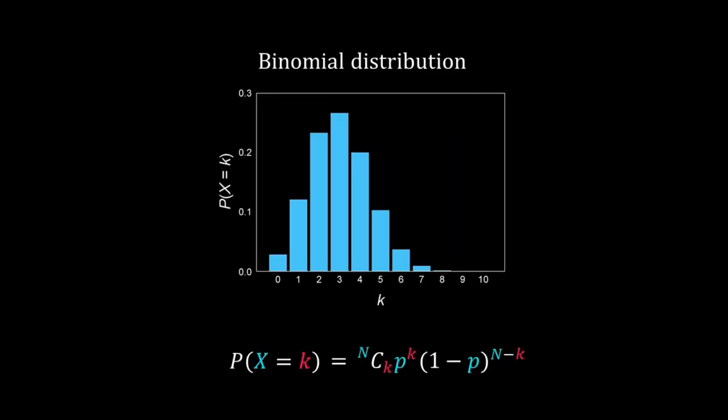The coin toss is easy to understand and calculations using the binomial distribution are straightforward. We will return to the binomial distribution again — with a few clever assumptions, we can convert a real-life problem into a coin toss problem and use the binomial distribution for its analysis.